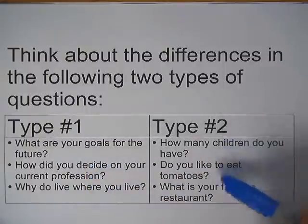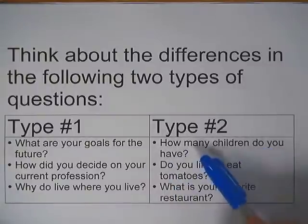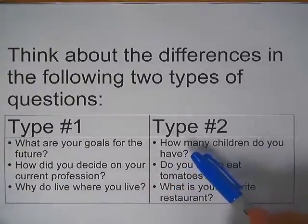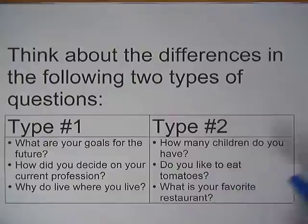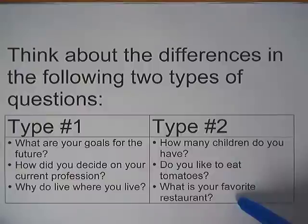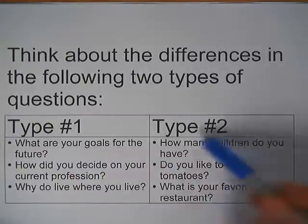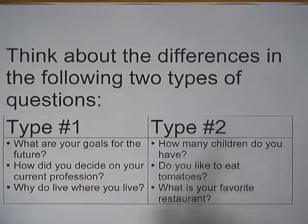Type 2 are all closed questions. How many children do you have? You just give the number — 1, 2, or 0. Do you like to eat tomatoes? That's really a yes or no question. What is your favorite restaurant? They're just going to name the restaurant. So these are all closed questions because they're going to be predictable.